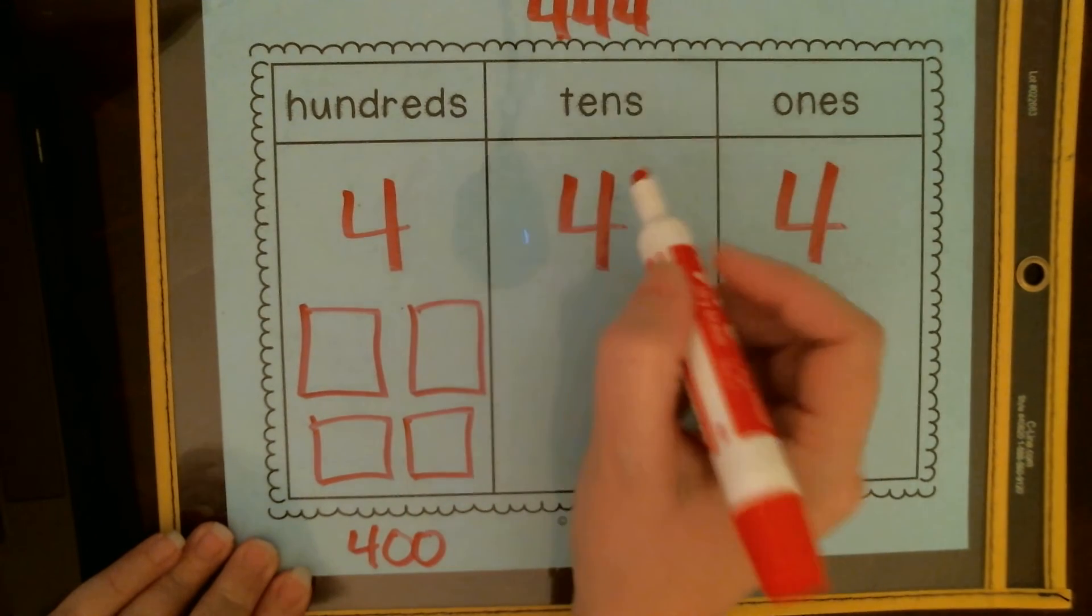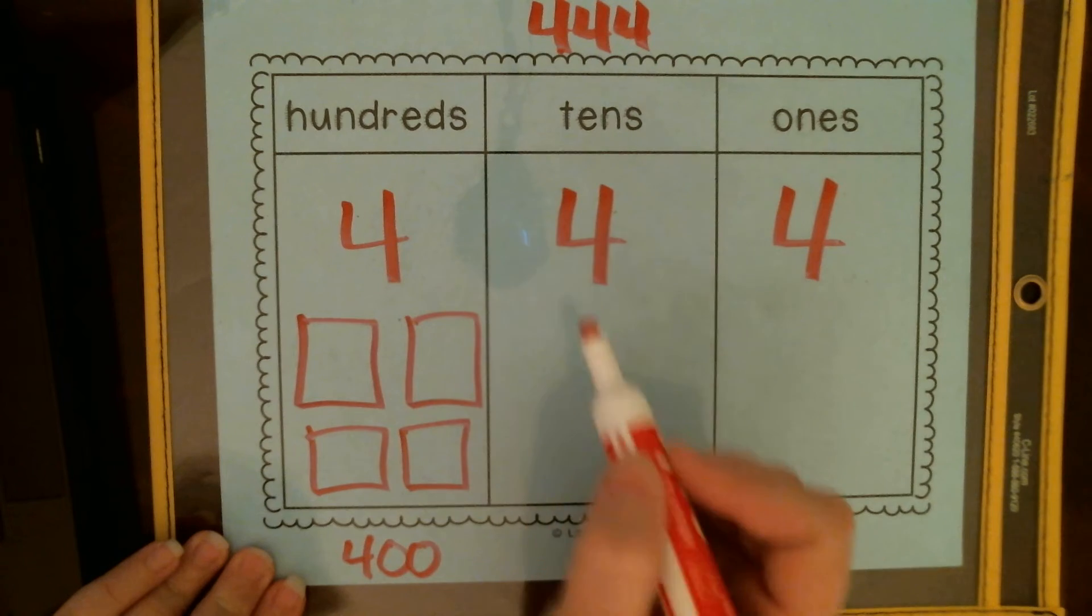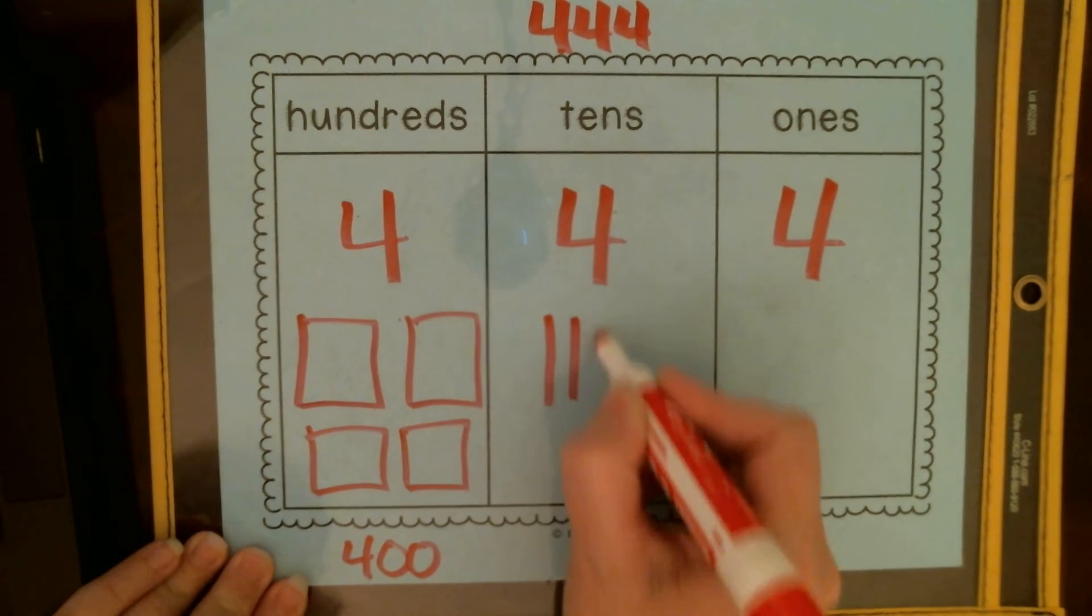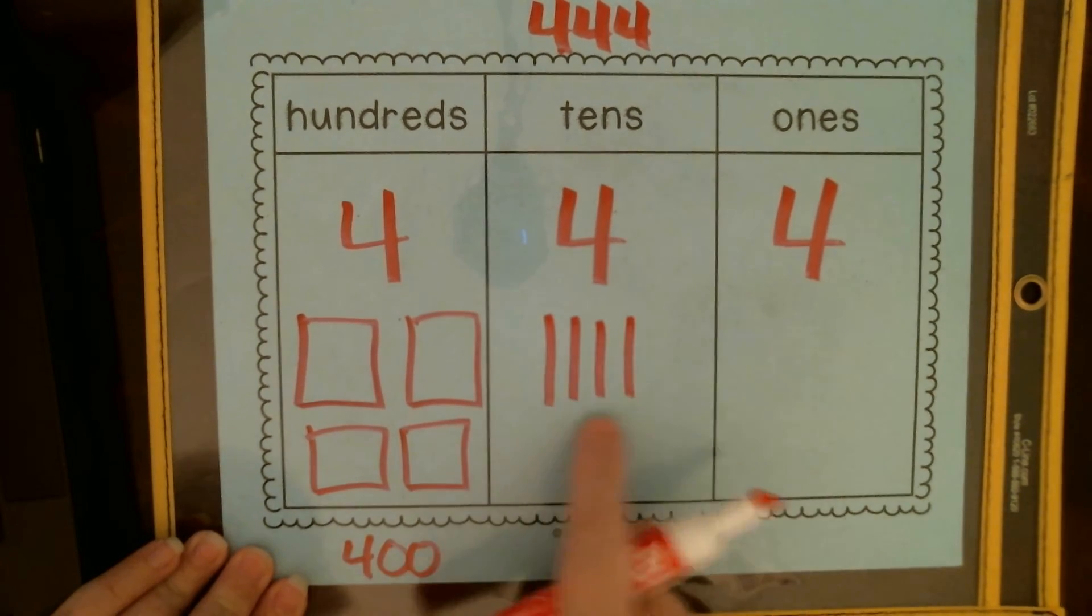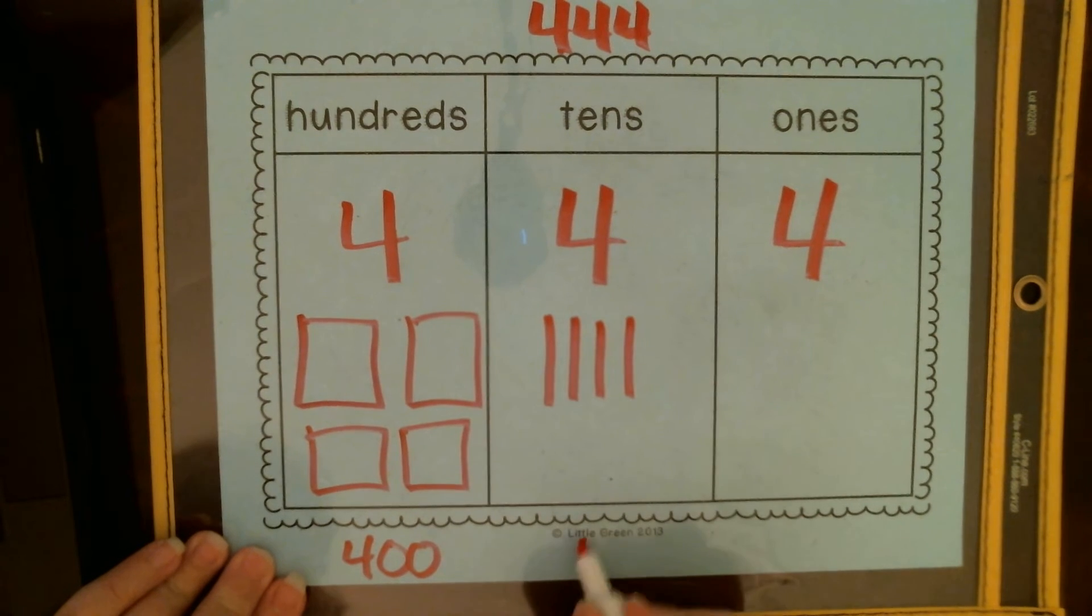That's what the first four is. The second four is in the tens place, so we picture it as four tens. The value of four tens is 40.